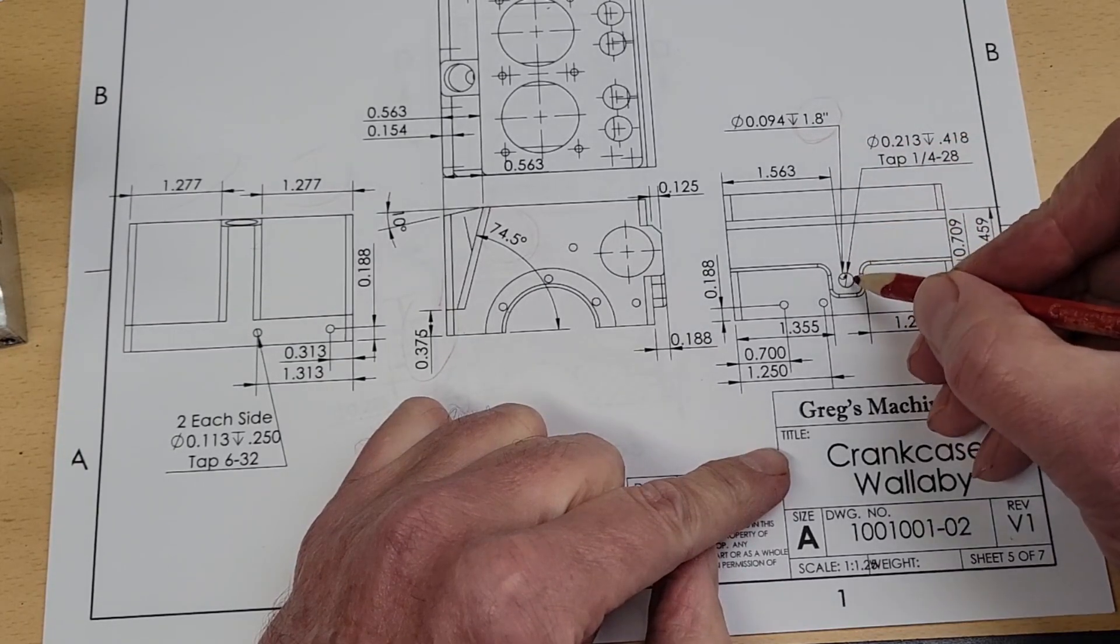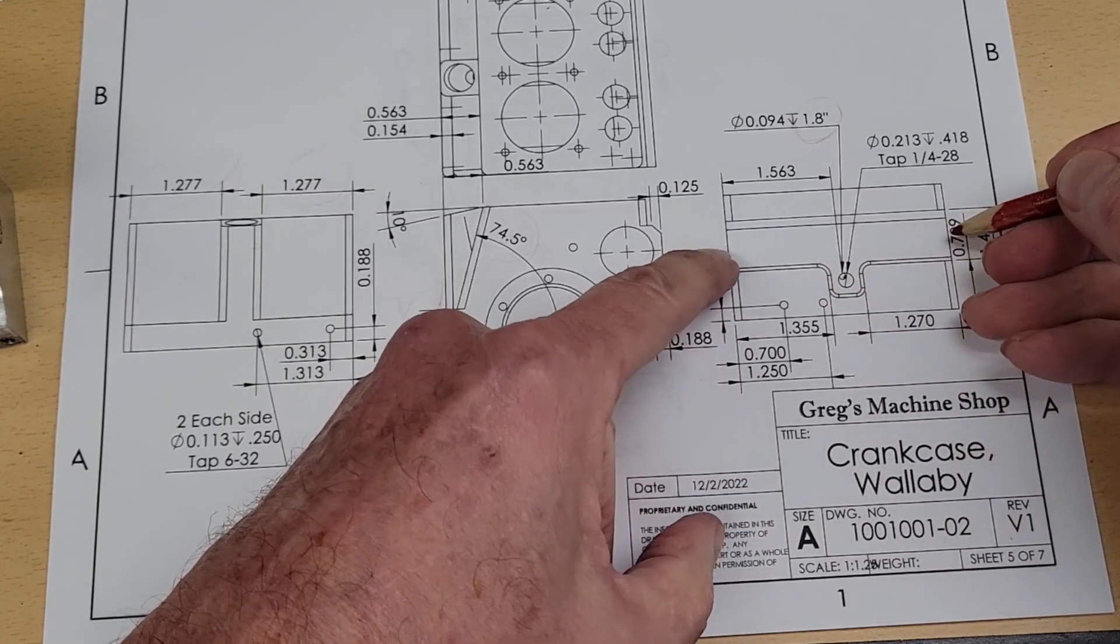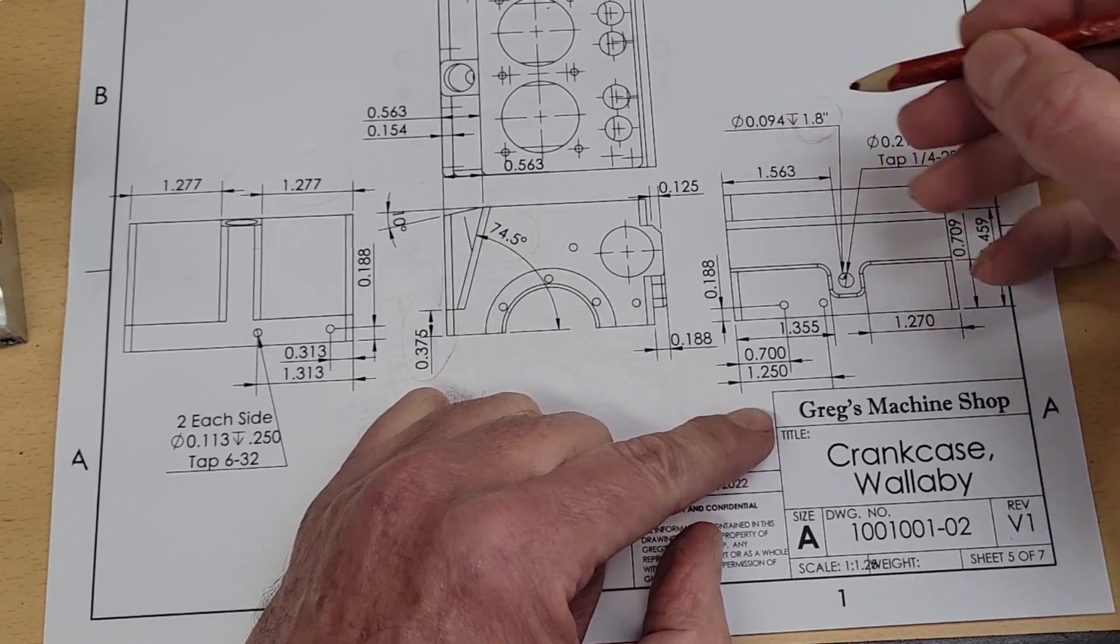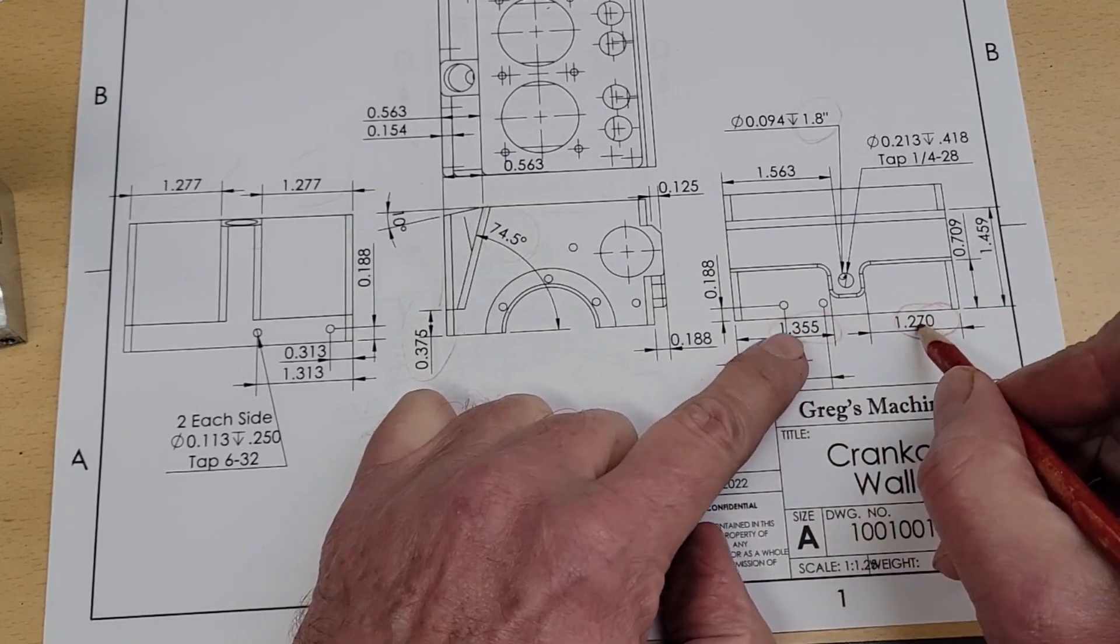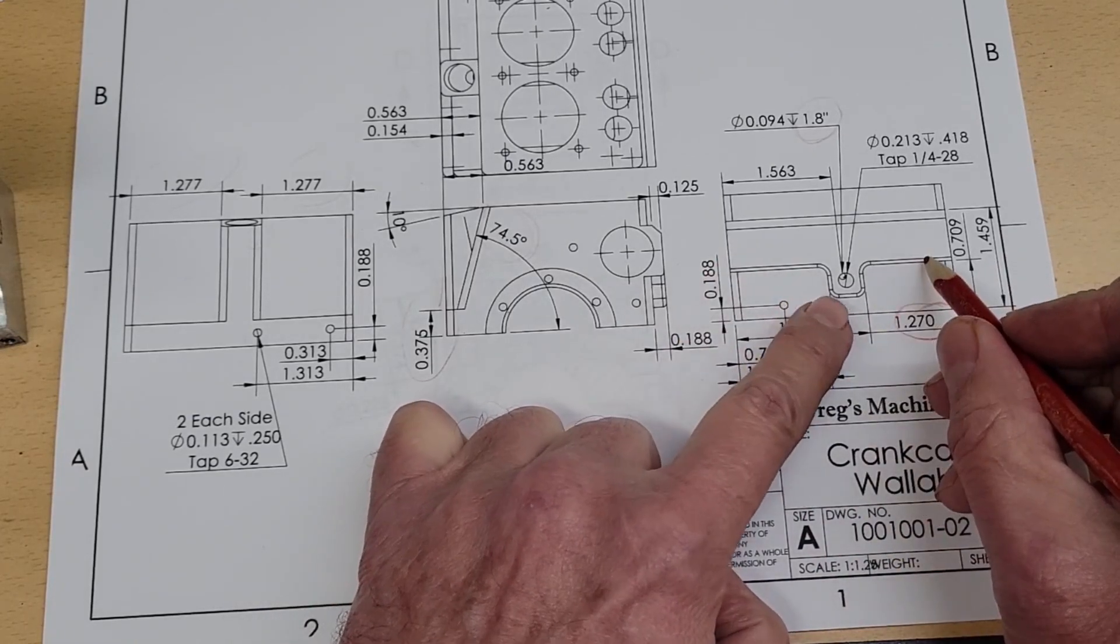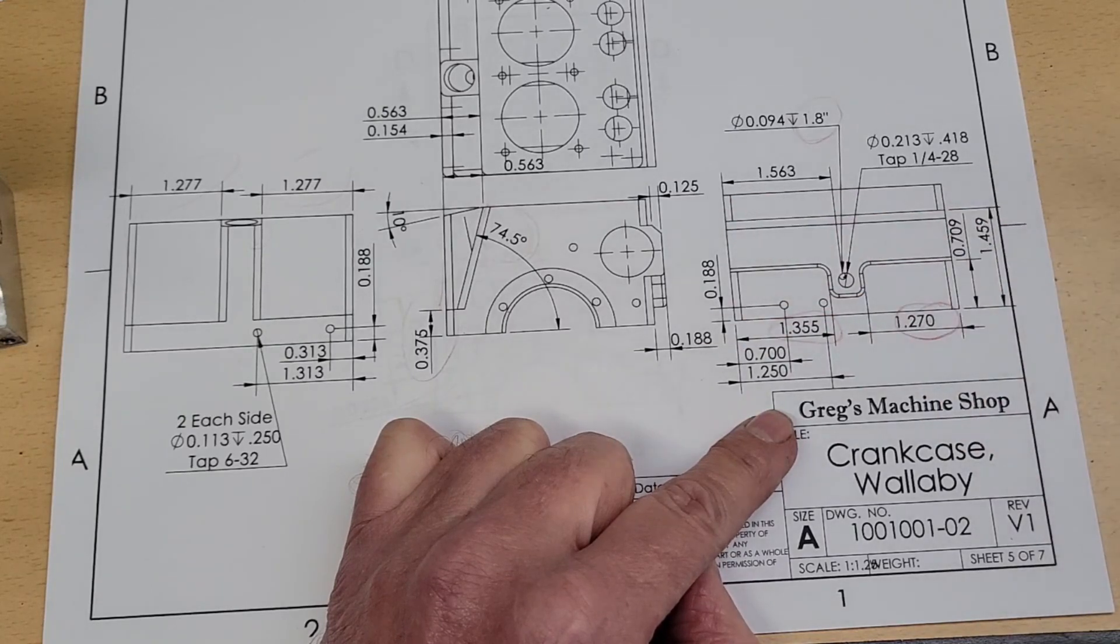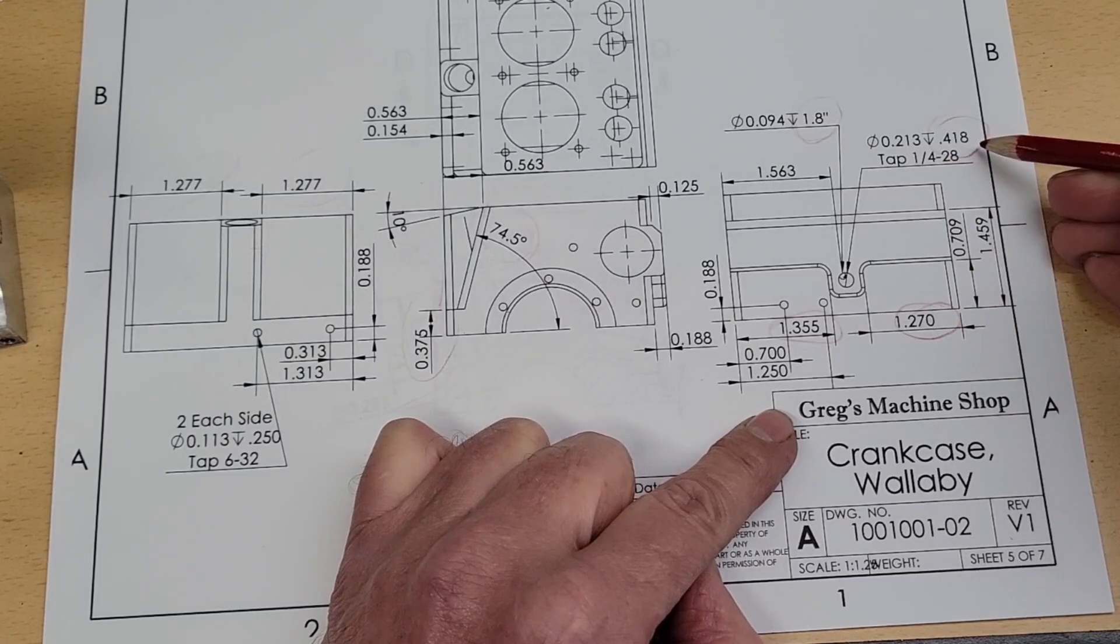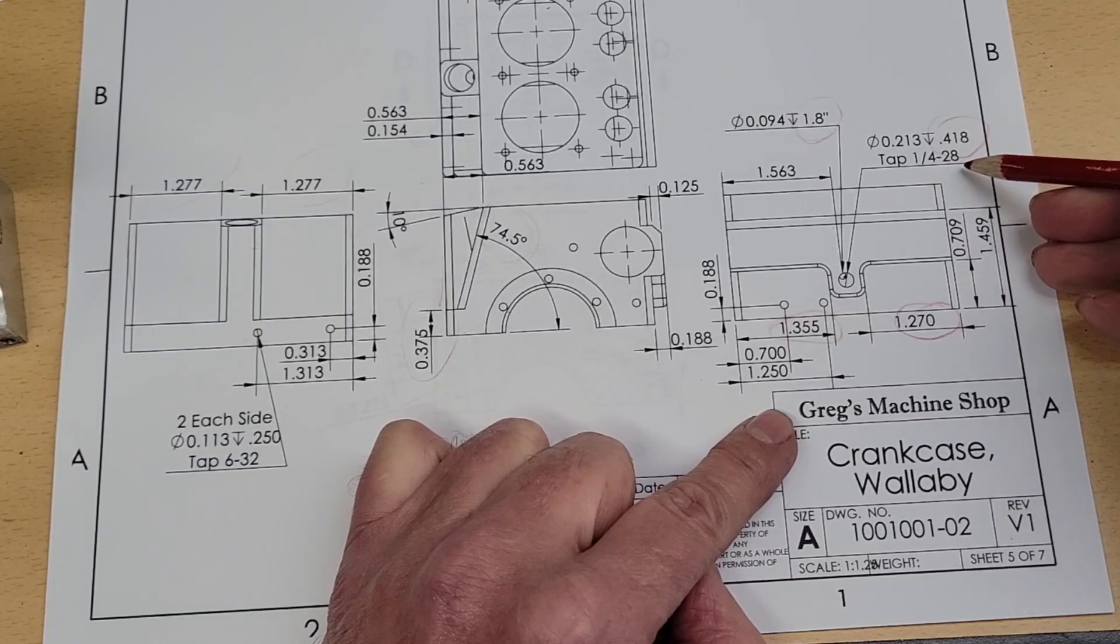We'll do that later because it's at an angle. But this hole, this feature here, is not centered front to back. However, this oil gallery hole is. Notice that this distance and this distance are different, and this feature has shifted a little bit. Now go ahead and machine this area out on the left-hand side, and then drill this hole 0.418 of an inch deep. 0.213 to be tapped at a quarter-twenty-eight.